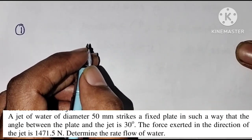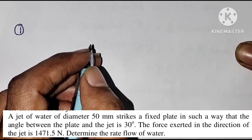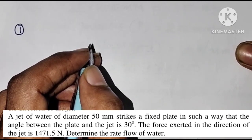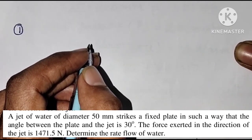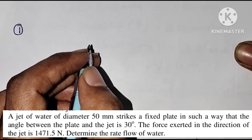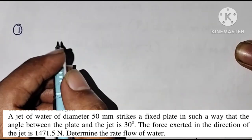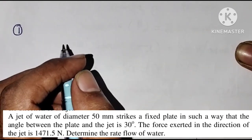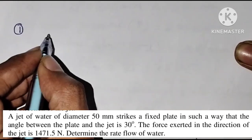A jet of water of diameter 50 mm strikes a fixed plate in such a way that the angle between the plate and the jet is 30 degrees. The force exerted in the direction of the jet is 1471.5 Newtons. Determine the rate of flow of water.